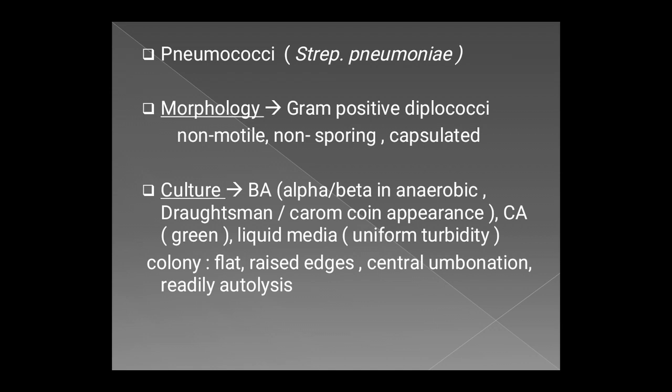On prolonged incubation in blood agar, it produces a carom coin appearance, or draughtsman colony, due to central umbonication formed by ready autolysis of the bacteria in the central zone, which gives a concentric ring appearance when seen from above. On chocolate agar, it produces greenish discoloration, with flat raised edges and central umbonication due to autolysis of the bacteria in the central portion.